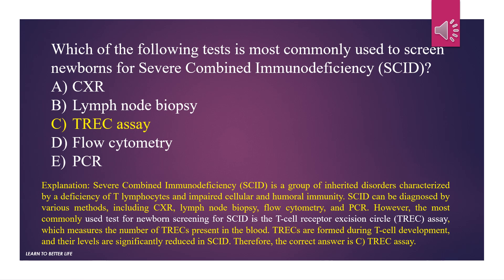Severe combined immunodeficiency is a group of inherited disorders characterized by a deficiency of T lymphocytes and impaired cellular and humoral immunity. SCID can be diagnosed by various methods, including chest X-ray, lymph node biopsy, flow cytometry, and PCR. However, the most commonly used test for newborn screening is the T-cell receptor excision circle, TREC, assay, which measures the number of TRECs present in the blood. TRECs are formed during T-cell development, and their levels are significantly reduced in SCID.